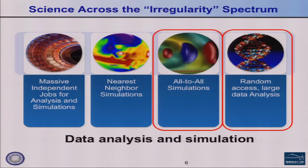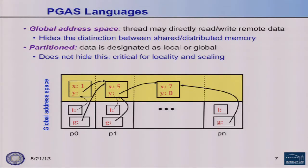PGAS languages have two advantages: convenience for random access problems, and performance because communication overhead is lower. The canonical PGAS picture has a global address space — a thread can directly read or write remote data associated with other threads. This is true globally, hiding the distinction between shared and distributed memory hardware, so you can hold a pointer to data anywhere in the system.